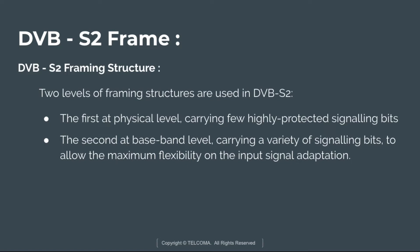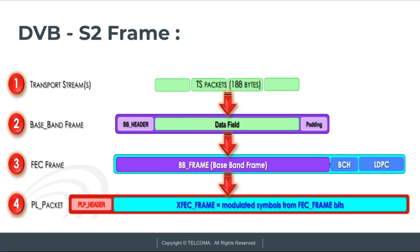There are two levels of framing structures used in DVB-S2. The first is at the physical layer level, which carries a few highly protected signaling bits — that is the PL frame — to provide bus synchronization and signaling at the physical layer. The second is at the baseband level, which carries a variety of signaling bits to allow maximum flexibility in input signaling adaptation, also known as the BB frame.